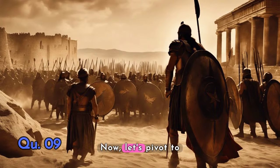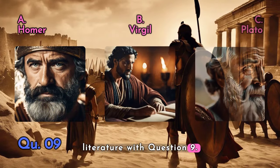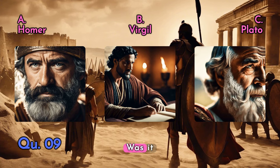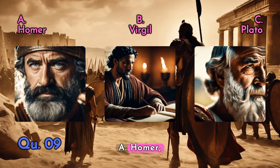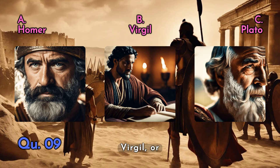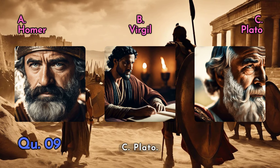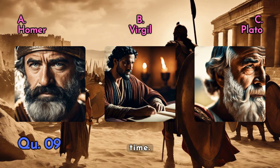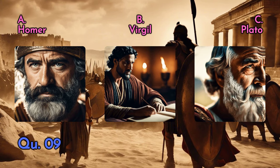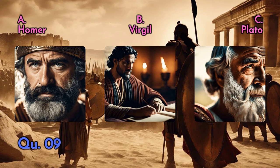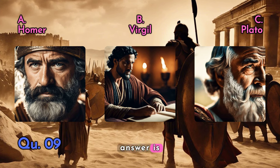Now let's pivot to literature with question nine: who wrote the epic poem The Iliad? A — Homer, B — Virgil, or C — Plato. A tale of heroes and the siege that echoed through time. And the answer is A — Homer.